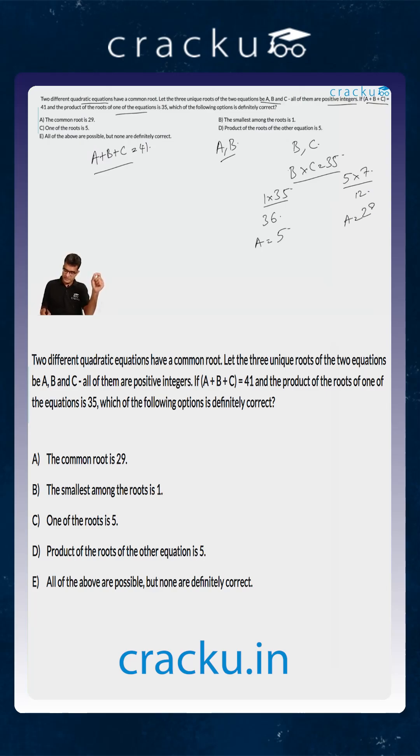The three roots in the first case are 5, 1, and 35, and in the second case, they are 29, 5, and 7 in some order. We are not concerned about which specific variable is which or which root is repeating.